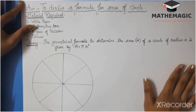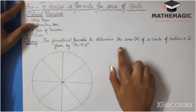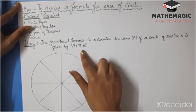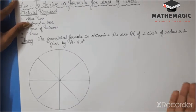The theory for this activity is that the geometrical formula to determine the area of a circle of radius r is given by A = πr². Let us see the steps or the procedure.